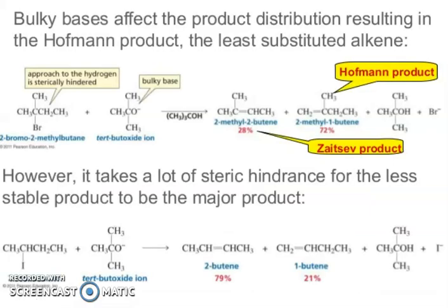Now, based on the base: bulky bases affect the product distribution, resulting in the Hoffman product — the least substituted alkene. Approach to the hydrogen is sterically hindered with bulky bases. You can see: 2-methyl-2-butene gives 28%, while 2-methyl-1-butene gives 72%. However, it takes a lot of steric hindrance for the less stable product to become the major product. For example, 2-iodobutane with t-butoxide gives 2-butene 79%, but 1-butene only 21%.